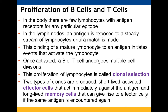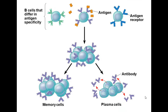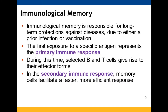Clonal selection produces two types of cells: short-lived effector cells that attack the antigen directly, and long-lived memory cells that can regenerate effector cells if the antigen reappears. B-cells that bind a specific antigen proliferate; plasma cells (effector cells) secrete the antibody protein to go attack that antigen.